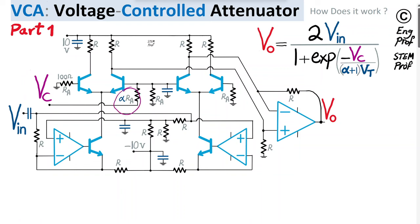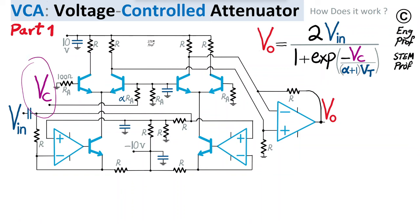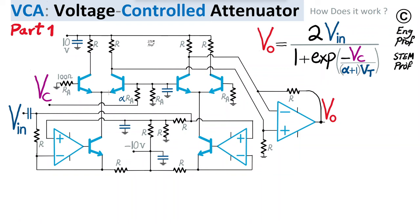Alpha in the denominator of the formula is the coefficient of a highlighted resistor which, combined with another R_A resistor, performs a voltage division of the control voltage. This controls the voltage at the base of the NPN BJT transistors in the circuit.